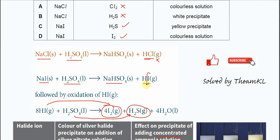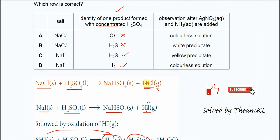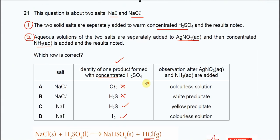So that's why for this one, observation after silver nitrate solution added and the concentrated ammonia solution added, we will see the yellow precipitate. So answer therefore is C.